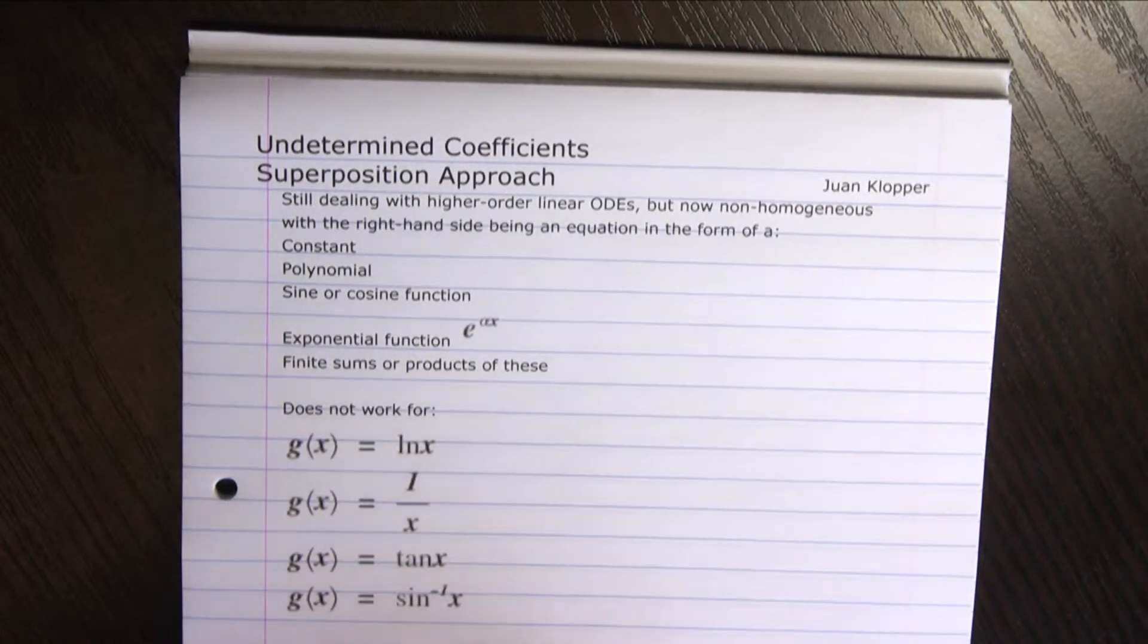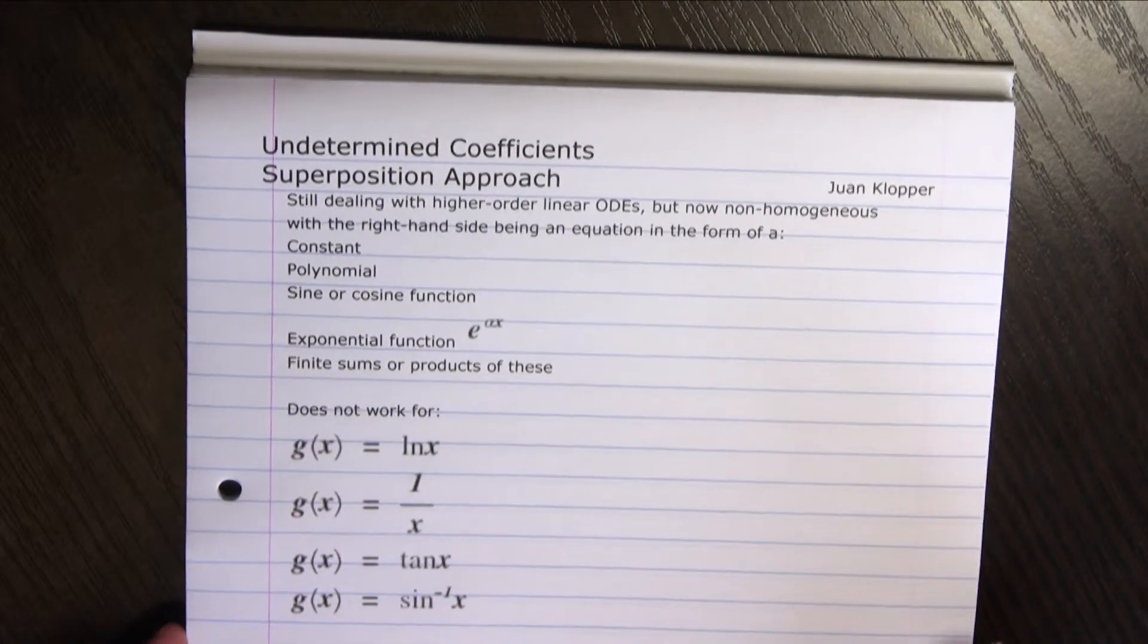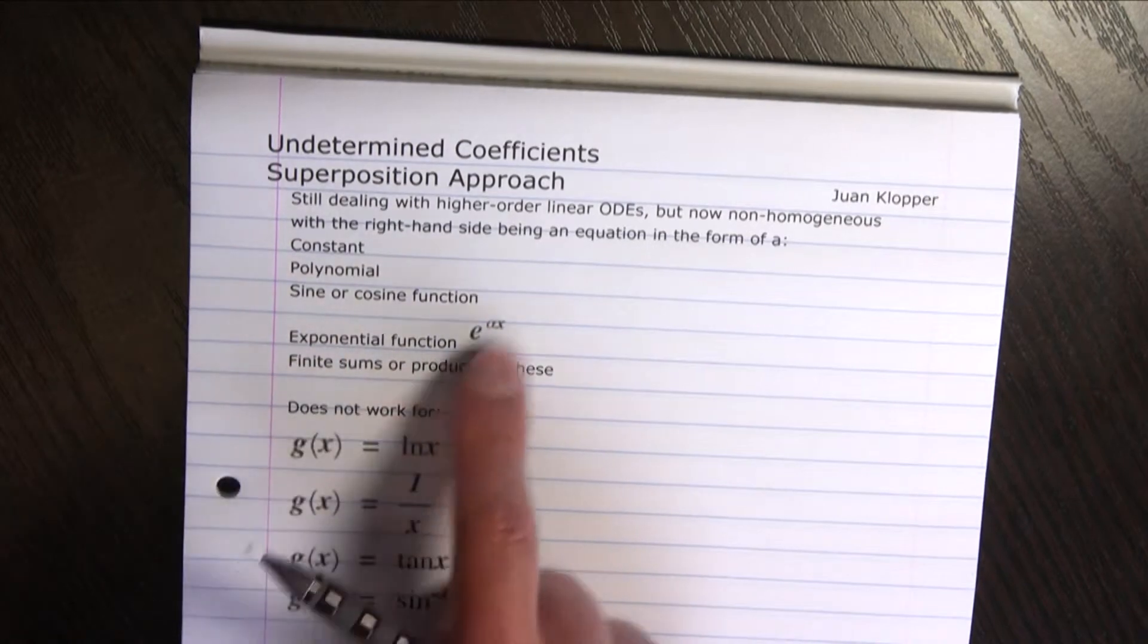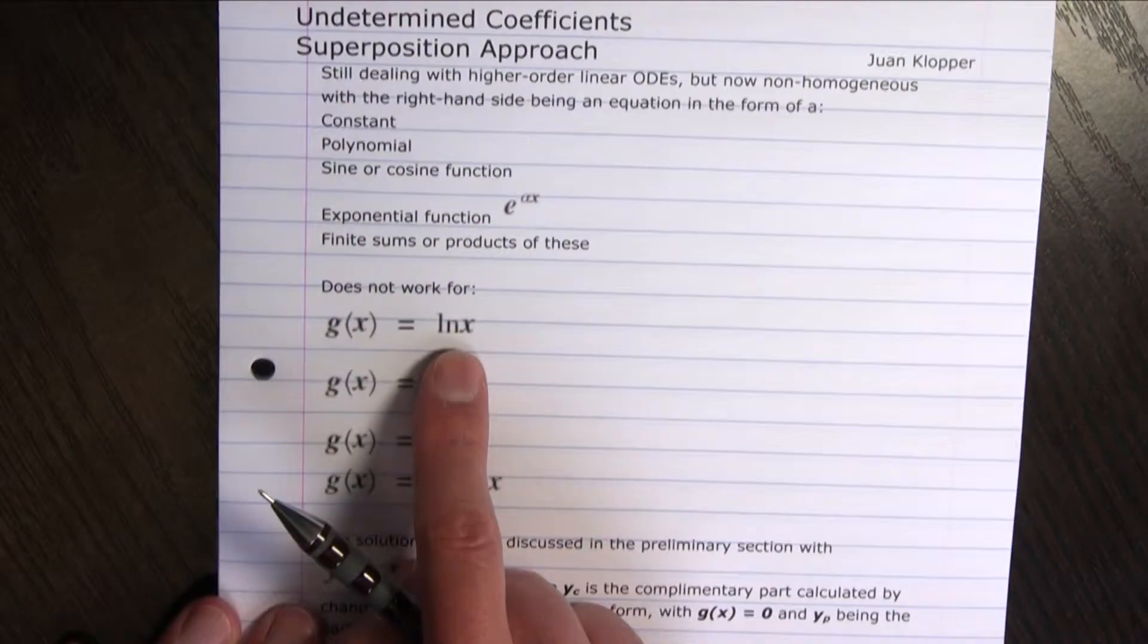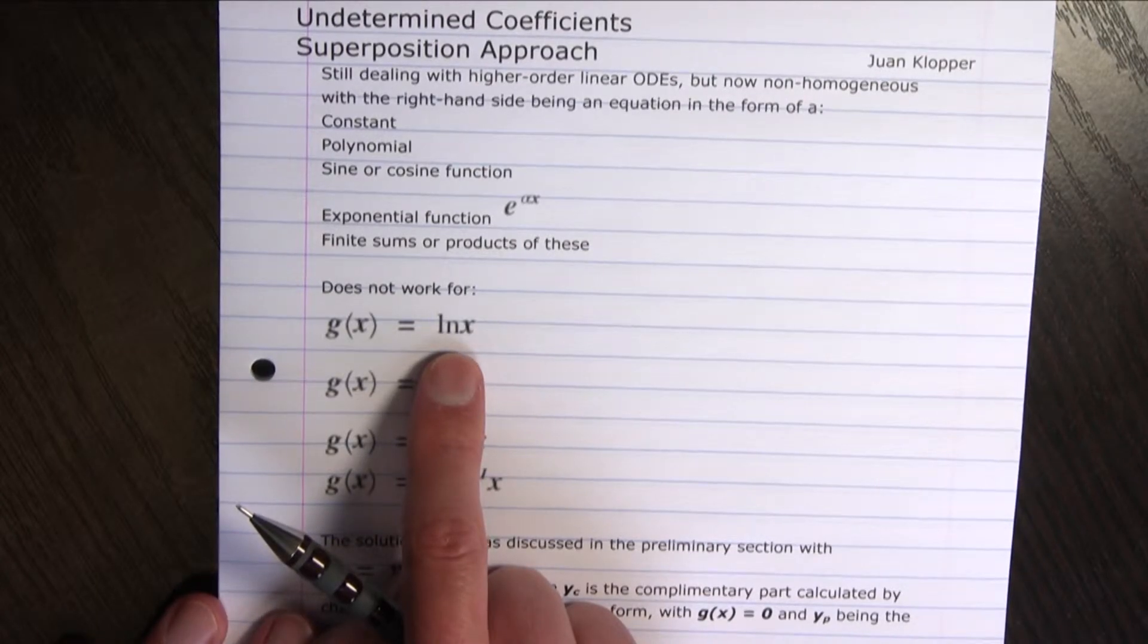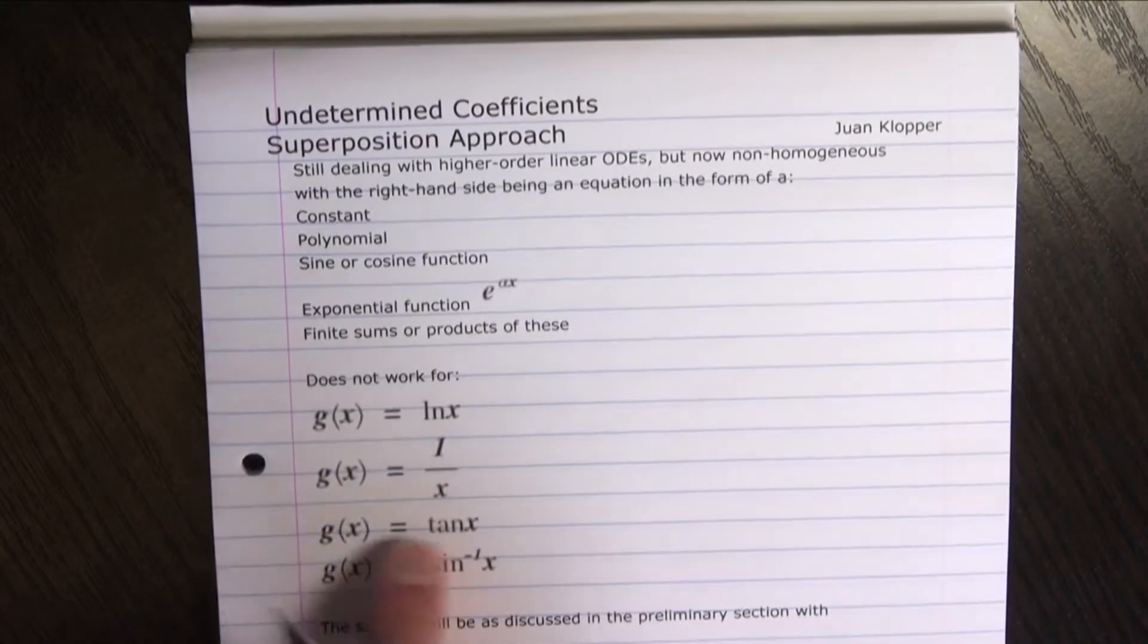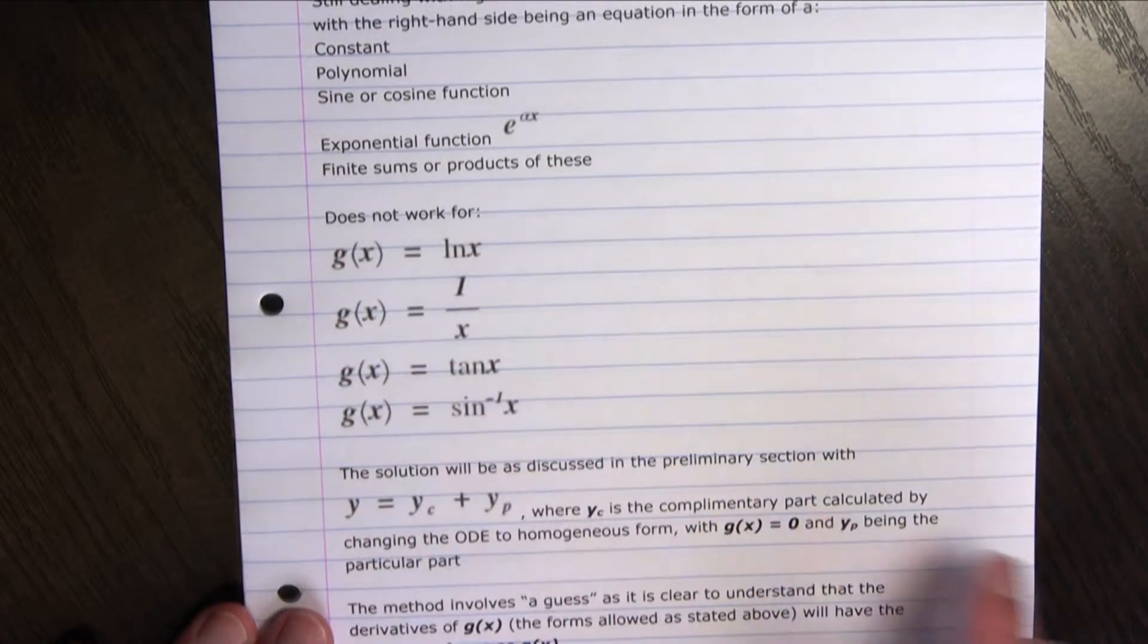This method actually involves a guess, and because of that it'll only work for the g of x on the right hand side of our differential equation being in one of these forms. So it's not going to work for these transcendental functions like natural logarithm of x, or 1 over x, or the tangent of x. It's only going to work for sine and cosine, not inverse trigonometric functions.